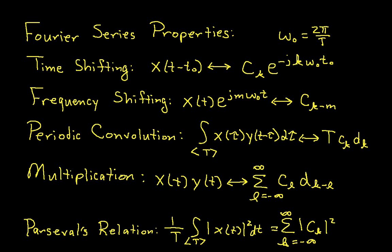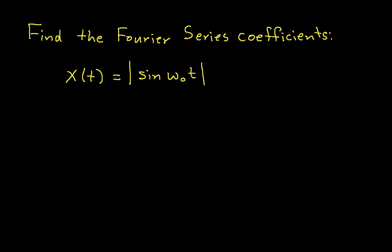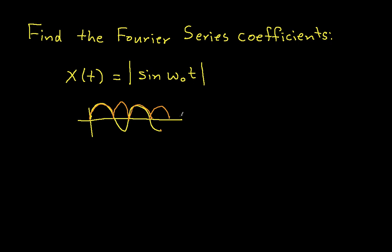In this video we will look at the following problem: we want to find the Fourier series coefficients of a rectified sine wave. The idea behind a rectified sine wave is you take a sine wave and take all the negative parts and change their signs so they're positive. Our goal is to do this without using any integrals at all, using the Fourier series coefficient properties.